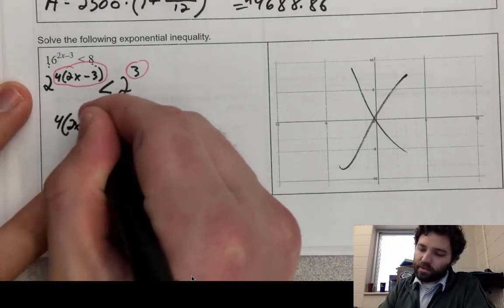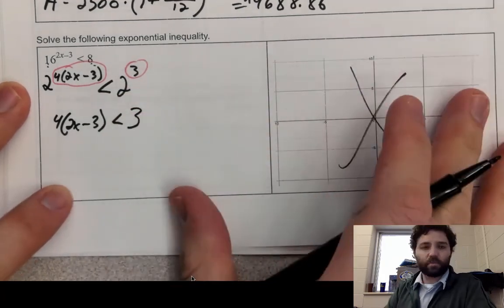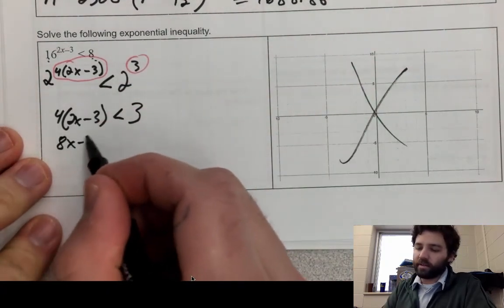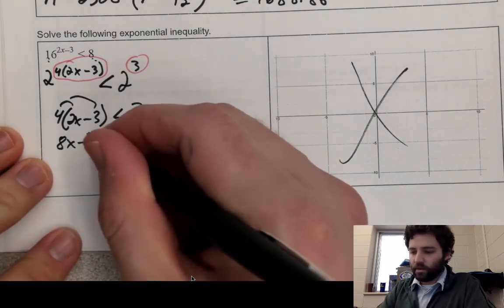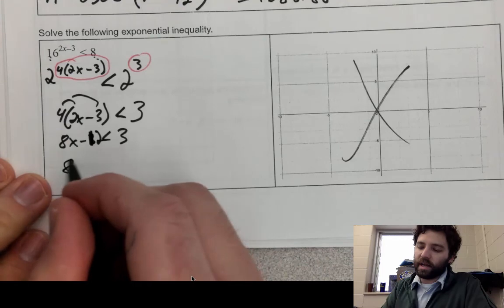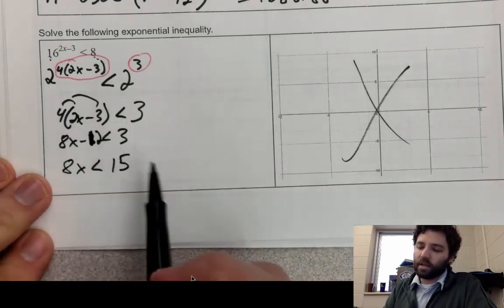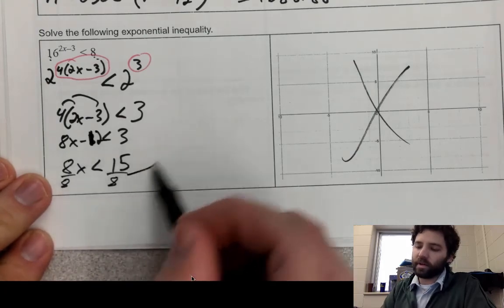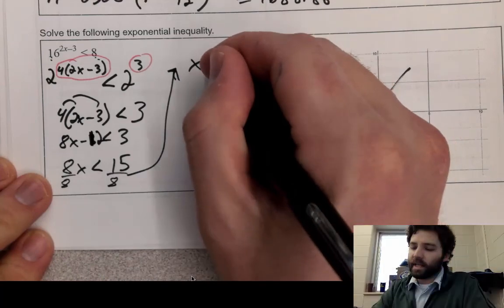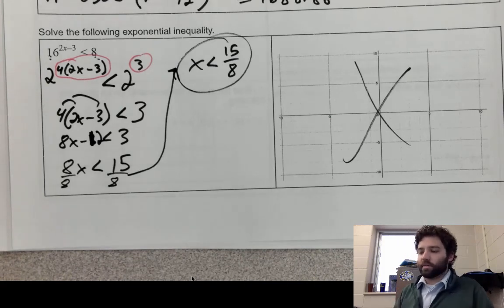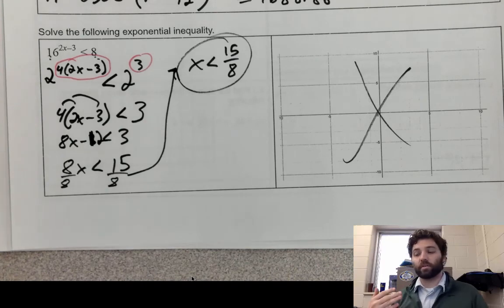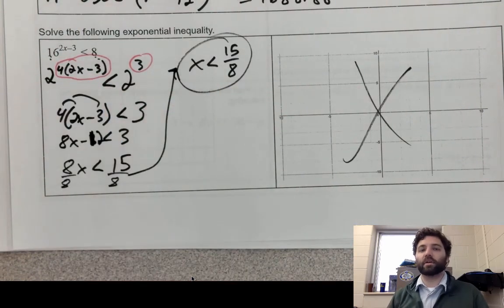Distributing: 8x minus 12 is less than 3. Adding 12 to both sides: 8x is less than 15. Dividing by 8: x is less than 15 over 8. That's the final answer for the inequality. You could graph it on a number line, but there's nothing to check since no value of x would create an error. It's very similar to solving equations, and that wraps up section 6.2.